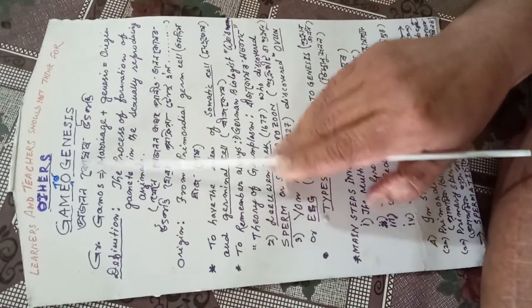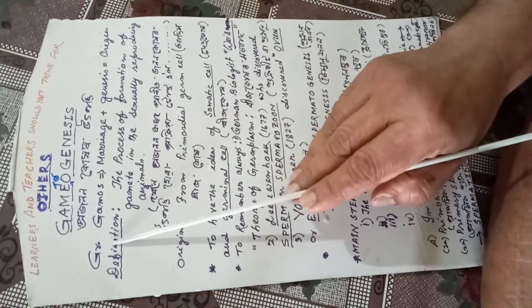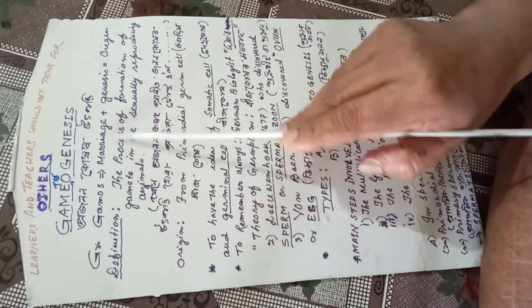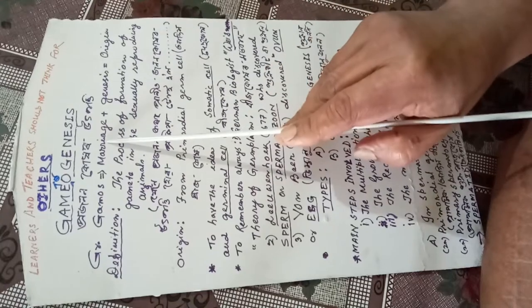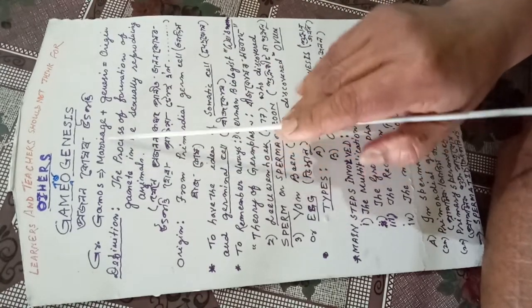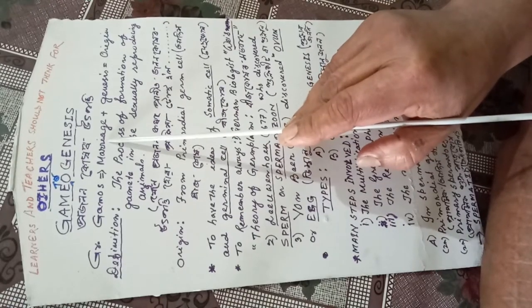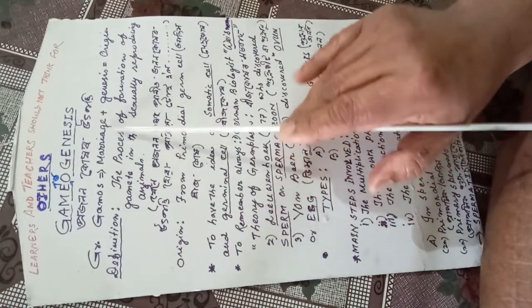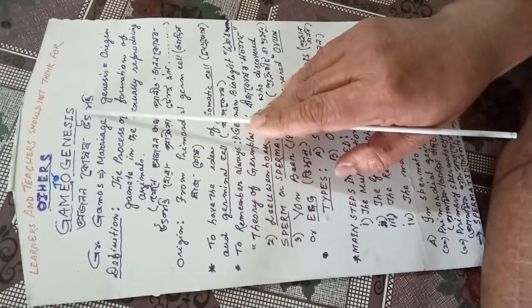The word 'gametogenesis' has been derived from a Greek word. 'Gamos' means marriage, and 'genesis' means origin. The word 'gamos' is related to sexually living organisms — in the case of human beings, specifically the union of male and female — and that is why when gamos and genesis combine, we get gametogenesis.